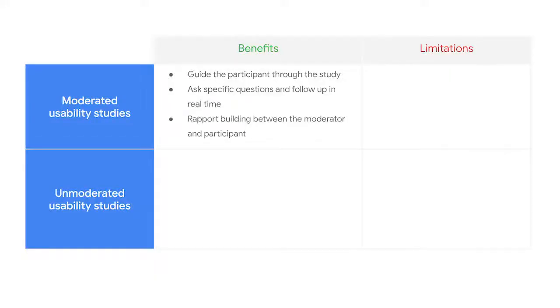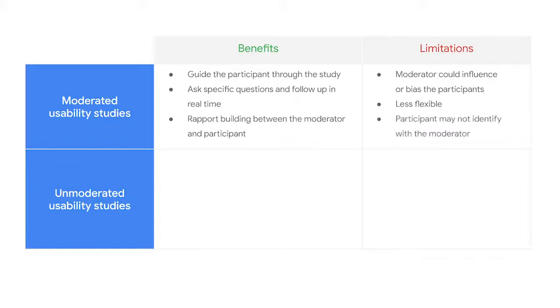Moderated usability studies also have some limitations. The moderator could influence or bias the participants — there's a chance that person can accidentally let their own thoughts or feelings come into the study. Also, moderated usability studies are less flexible — it's harder to reach populations like single parents or night shift workers who may be unavailable during daytime hours, and the study can be difficult to reschedule if a participant doesn't show up. In addition, there's a chance the participant may not identify with the moderator, making them less comfortable and less open with their feedback.